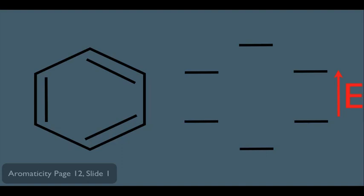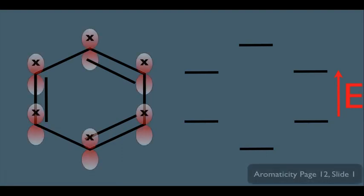The next thing we need to do is fill in the electrons. Benzene has six pi electrons. In molecular orbital theory, electrons are represented as half-headed arrows like this. We also talked about how to fill in these molecular orbital charts — it follows the Aufbau principle, which means electrons fill lower energy orbitals first and work their way up towards higher energy orbitals.